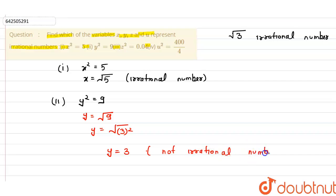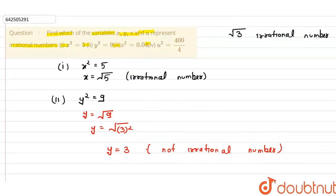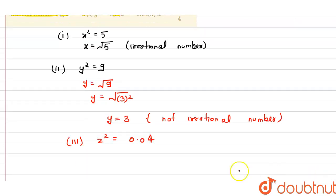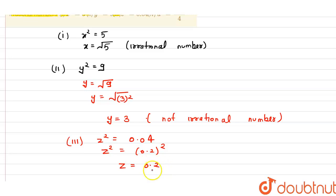The third part is z² = 0.04. When we simplify, we can write 0.04 as (0.2)². Taking the square root gives z = 0.2. Since 0.2 is a rational number, this part also does not represent an irrational number.